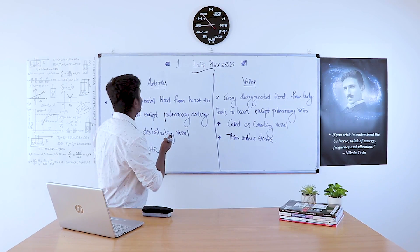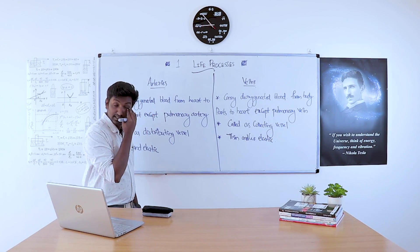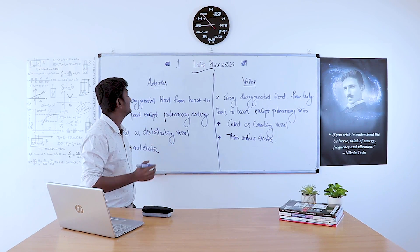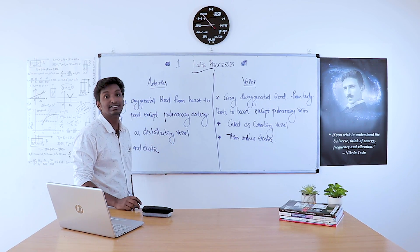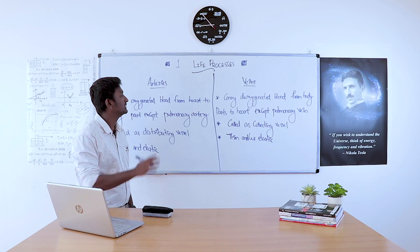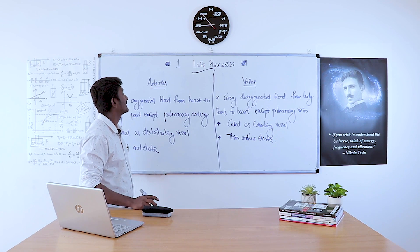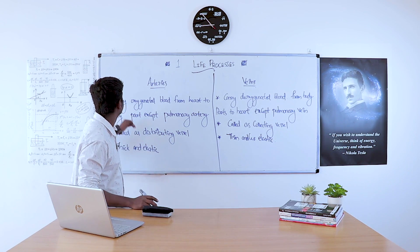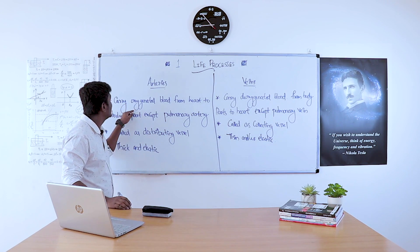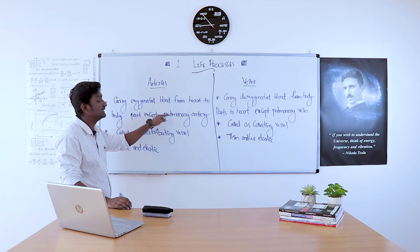The difference between arteries and veins: arteries carry oxygenated blood from the heart to the body parts, except for pulmonary arteries.